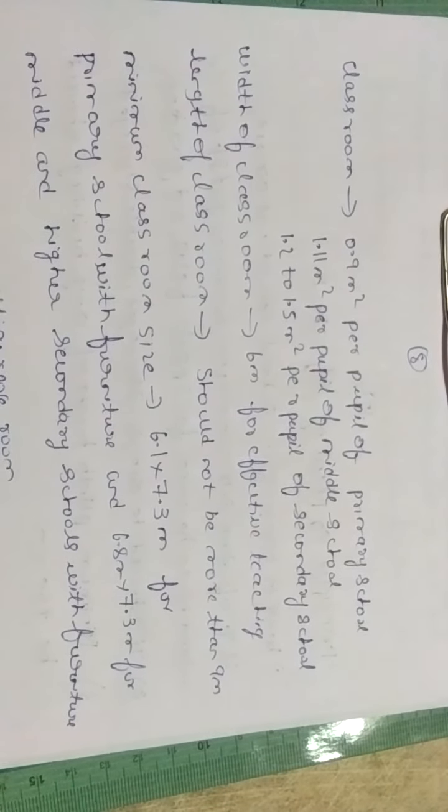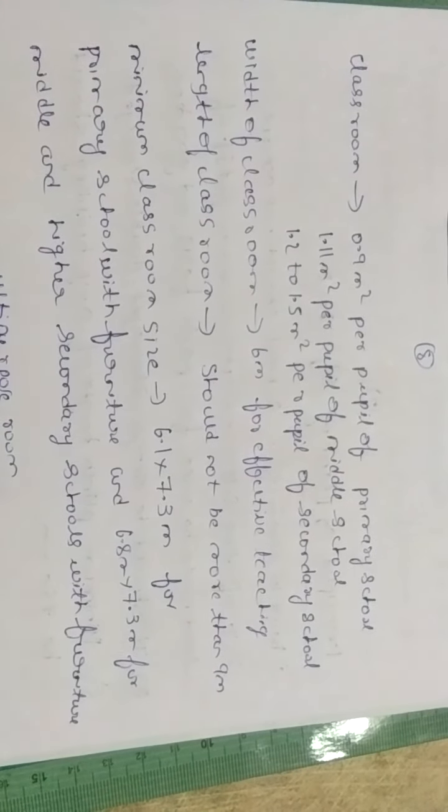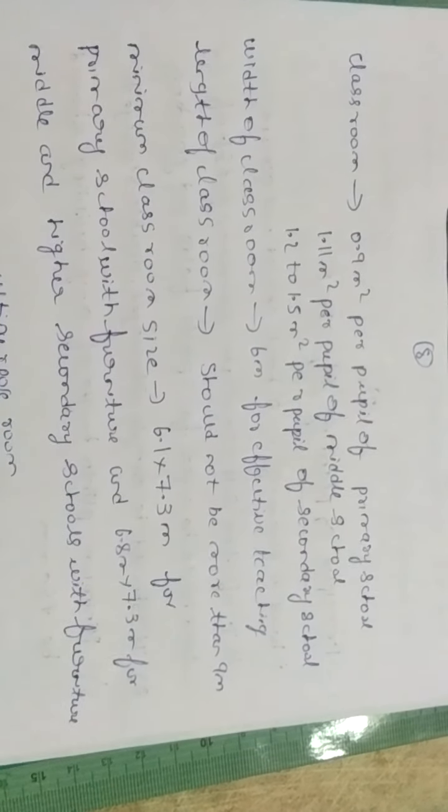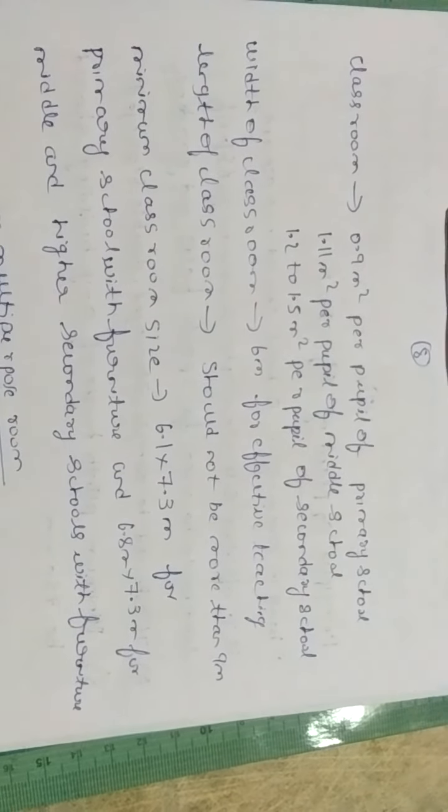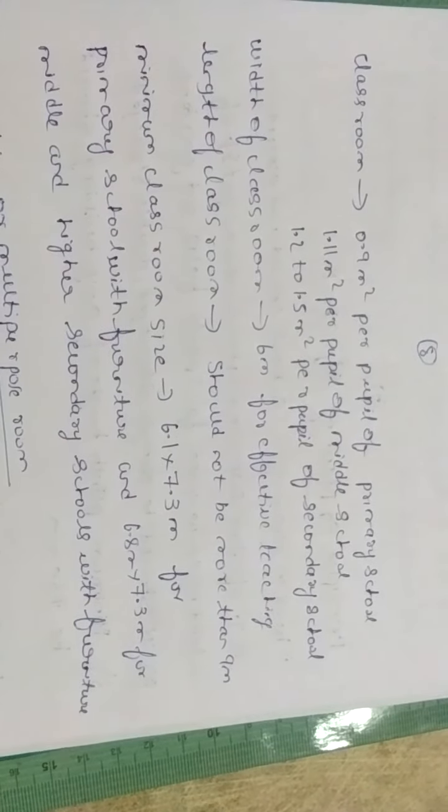So 0.9 meter square per student or pupil of primary school. Here primary school means we should consider lower primary, up to fifth standard. So higher primary means fifth, sixth and seventh.